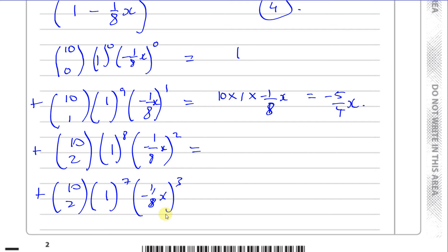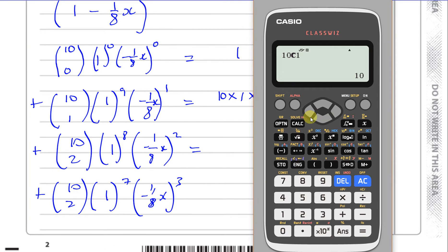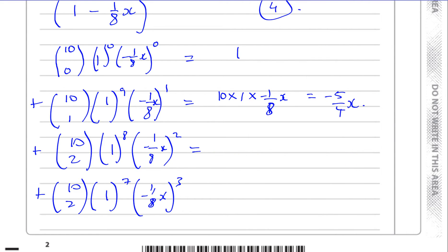And the next term, you will have 10c2, so you can just change that to a 2. That's going to be 1 to the power of 8, which will also give me 1. So 10c2 will give you 45. So you have 45 times 1 times, and you're going to have 1 over 64x squared. So you end up with 45 over 64x squared.